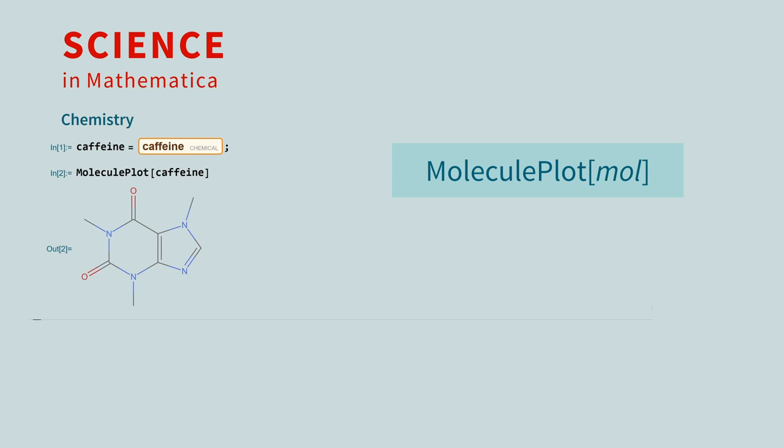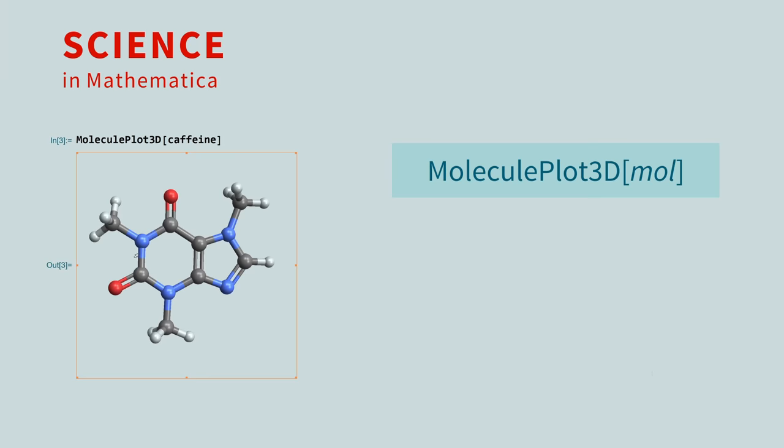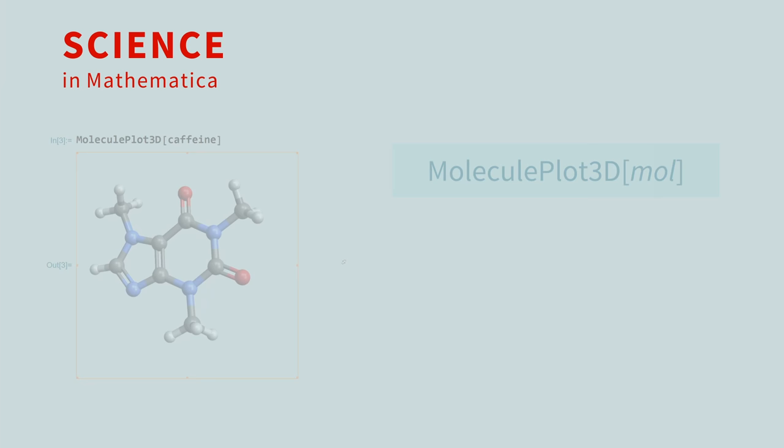But molecules are not all planar. They live in 3-dimensional space. For a more realistic image of a caffeine molecule, you can use the MoleculePlot3D function. And by grabbing the molecule, you can rotate it in 3-dimensional space to look at it from different angles.